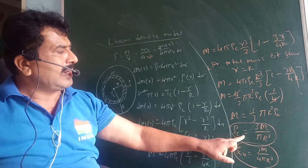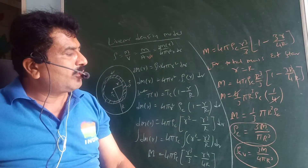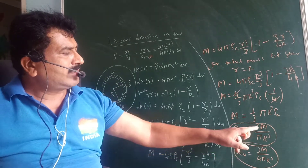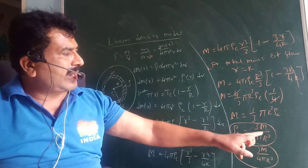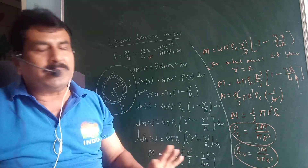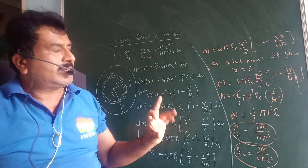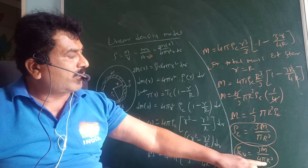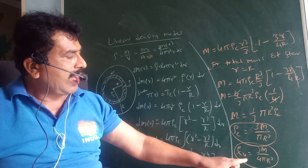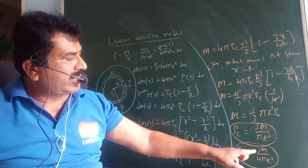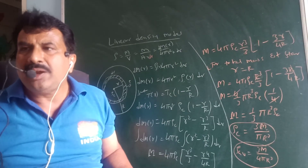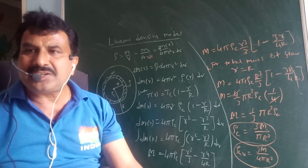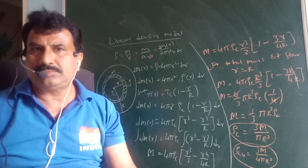Cross-multiplying, we get the density at the core of the star: ρc = 3M / (πR³), which is directly proportional to mass M and inversely proportional to R³. Similarly, the average density of the star is given by: ρ_avg = 3M / (4πR³). So we can determine the core density and average density of the star using these two formulas.